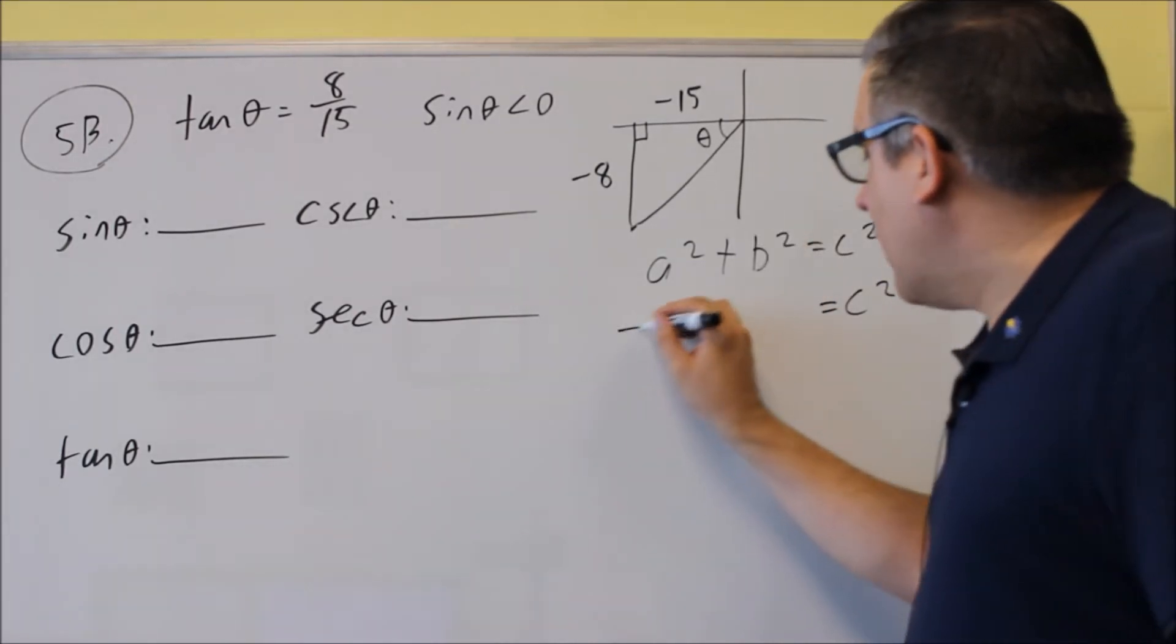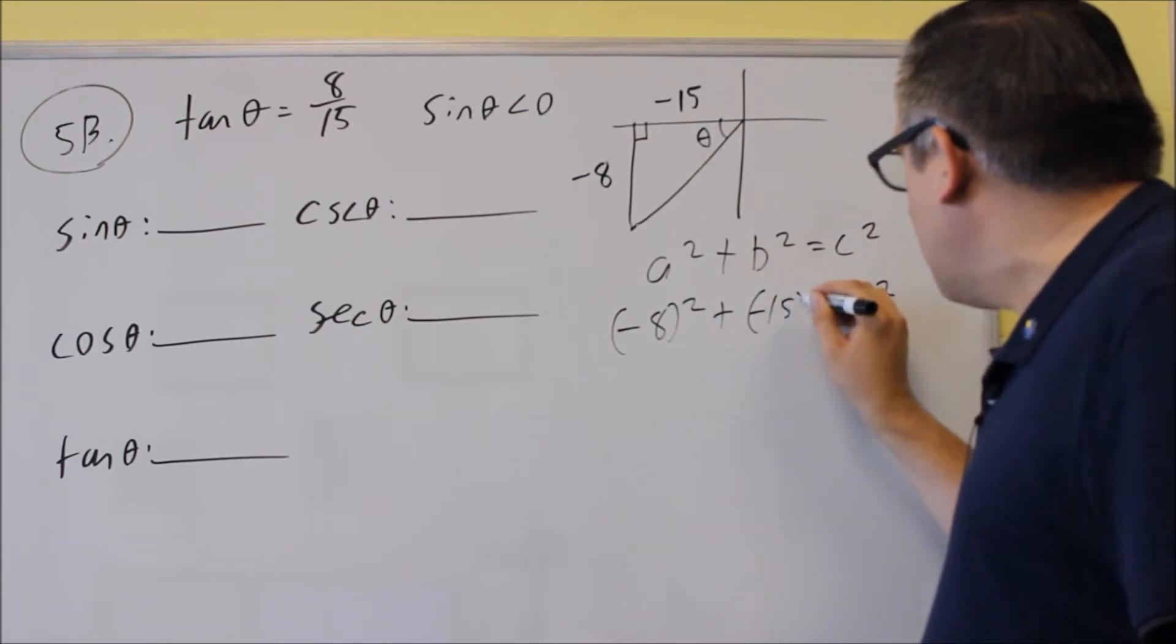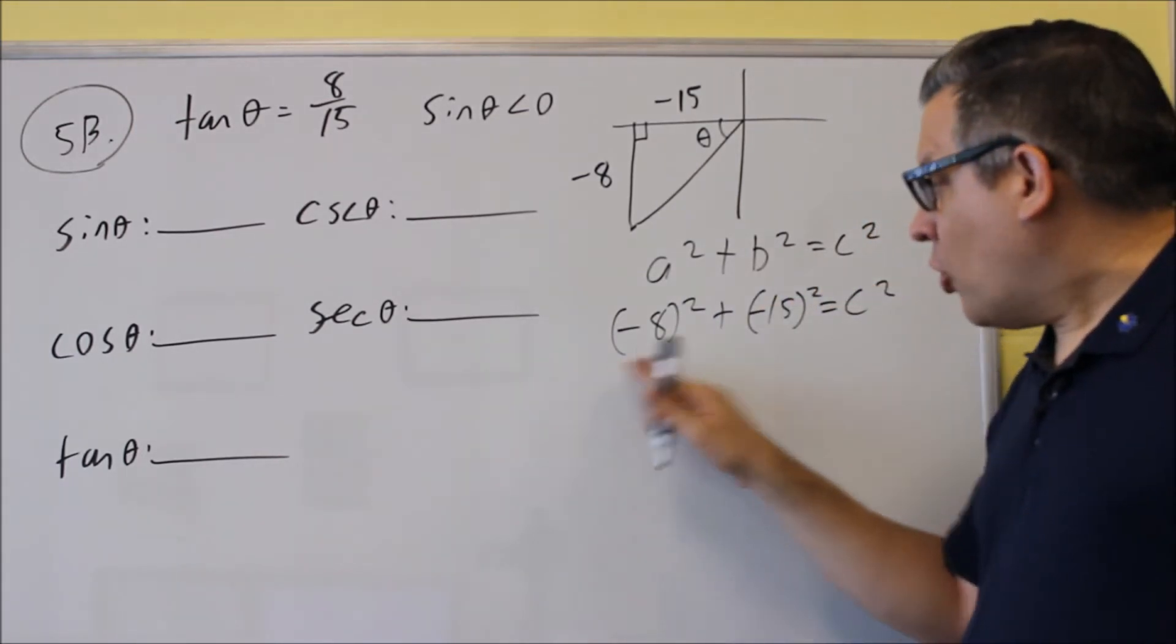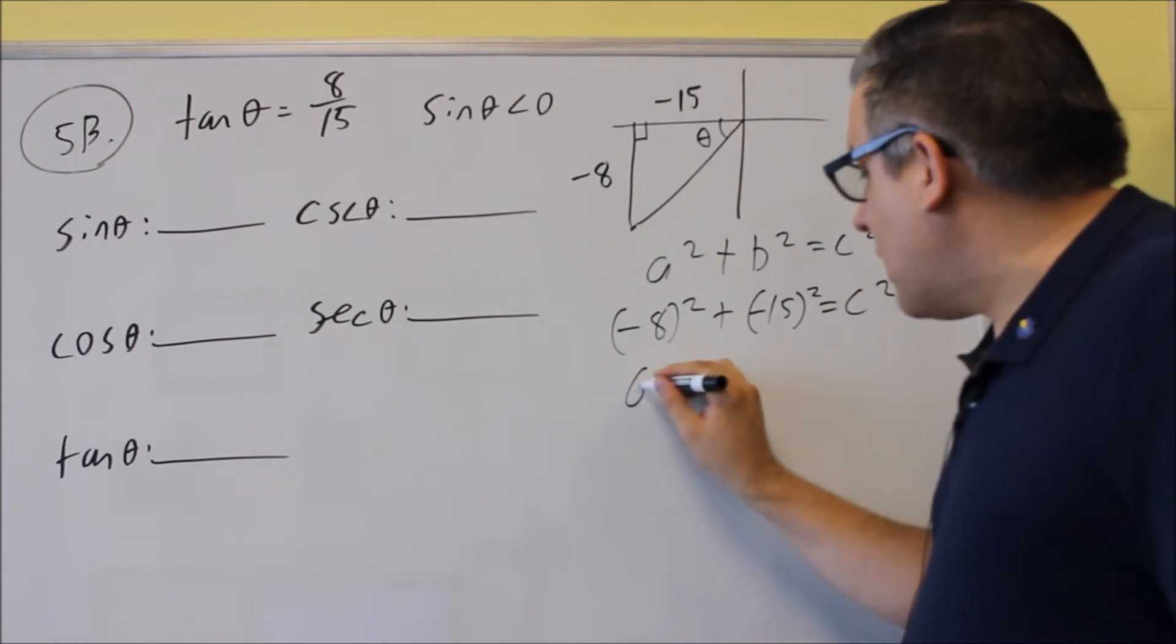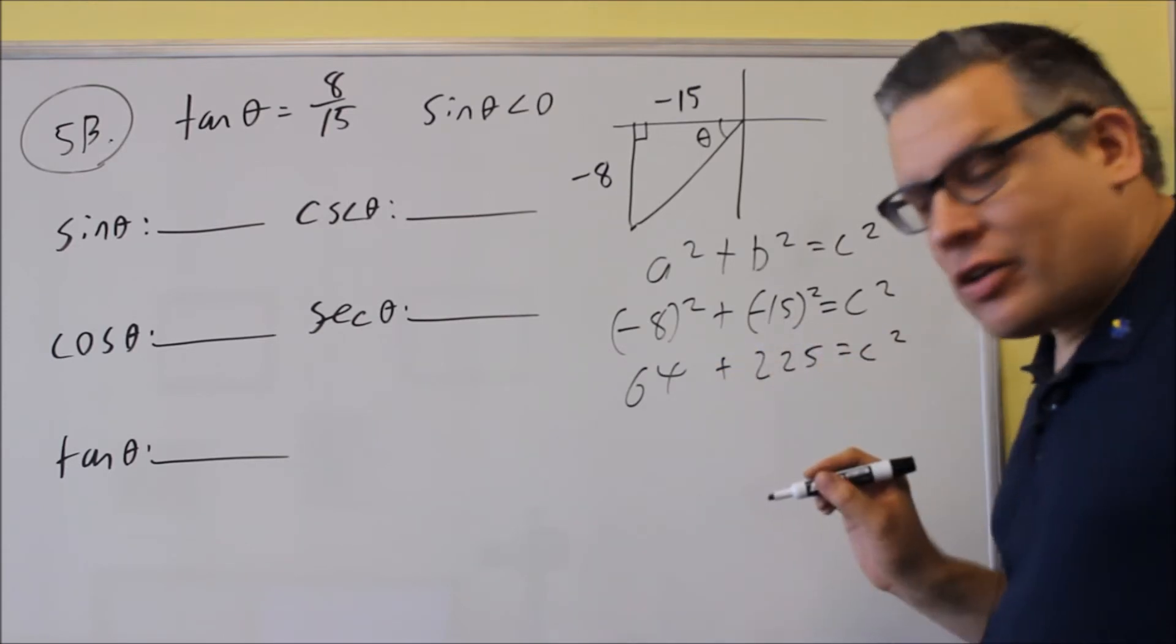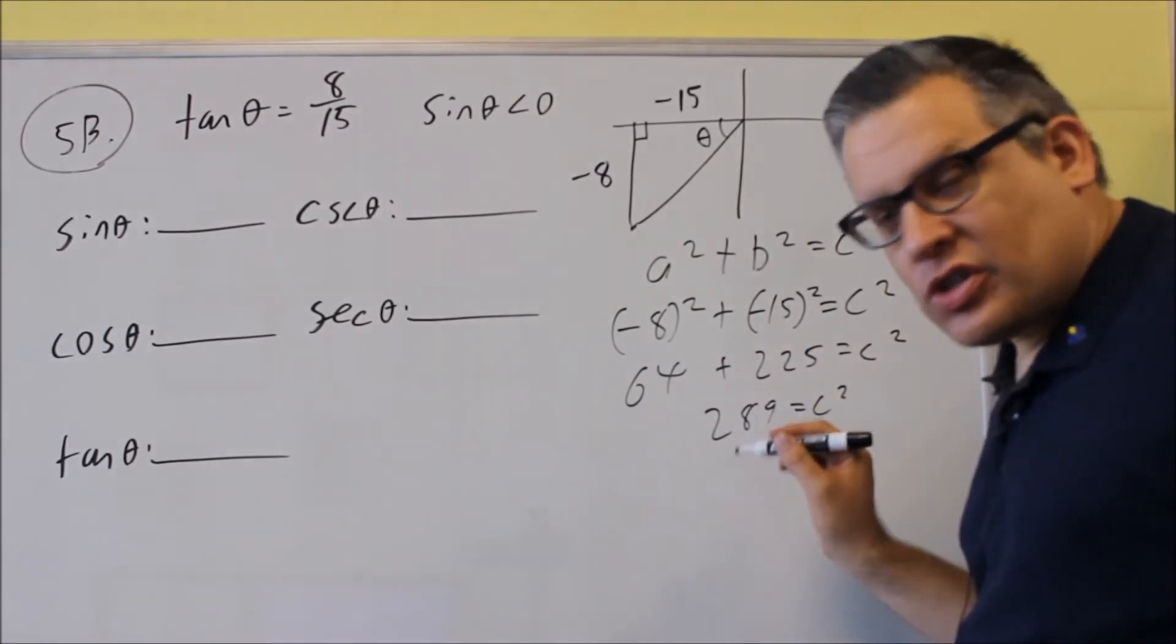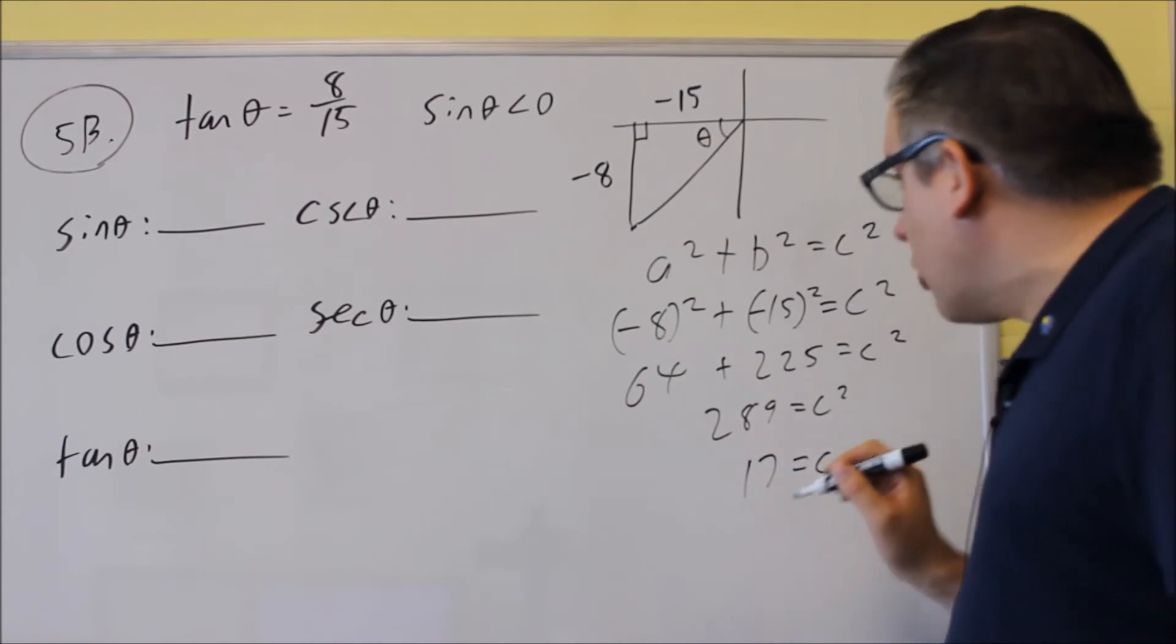For the other two, we have negative 8 squared and negative 15 squared. Both of these will become positives. So we're going to get positive 64 and 225. Add that together, you're going to get 289, square root of both sides.